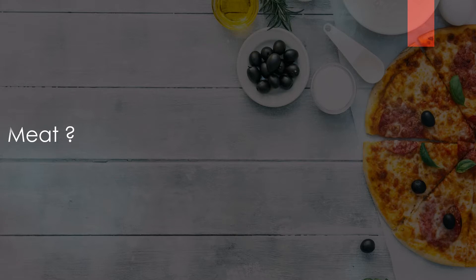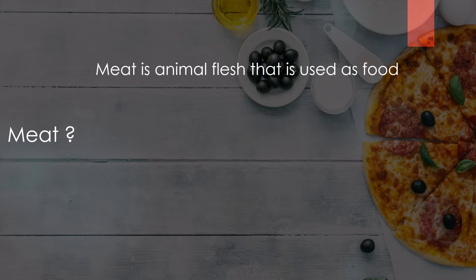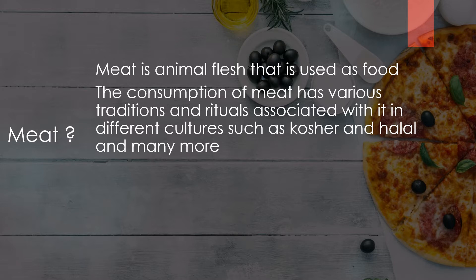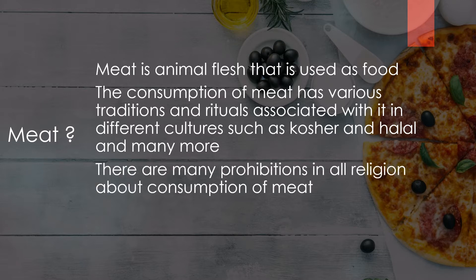What is meat? Meat is an animal flesh that is used as food for consumption. Meat has various traditions and rituals associated with it in different cultures, such as kosher and halal. Muslims never prefer jhatka meat — they always prefer halal meat. As well as there are many prohibitions in Hindus, Buddhists and Jews regarding meat consumption.